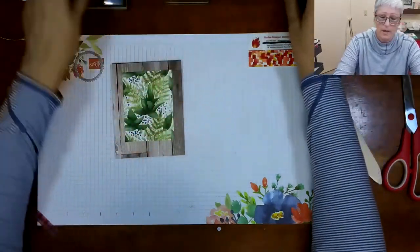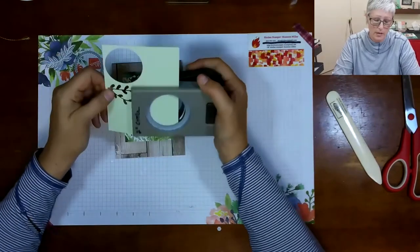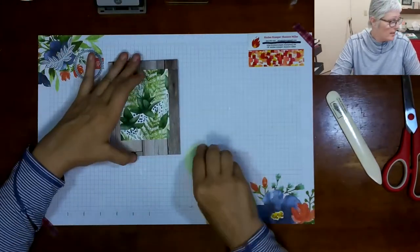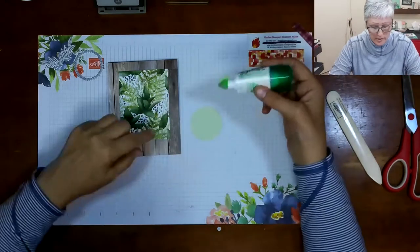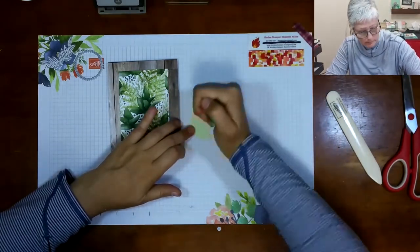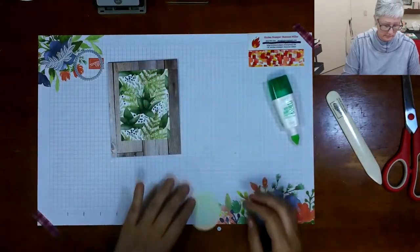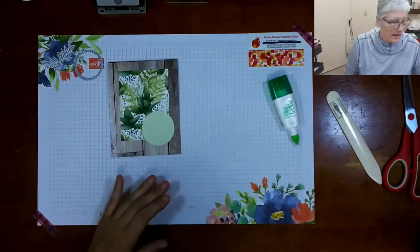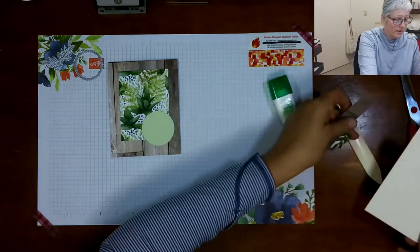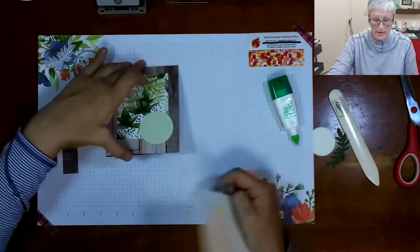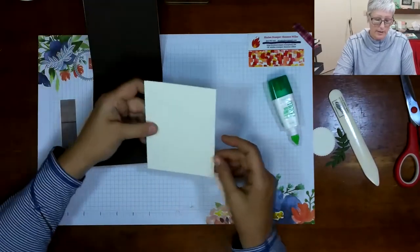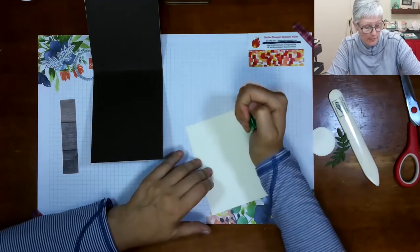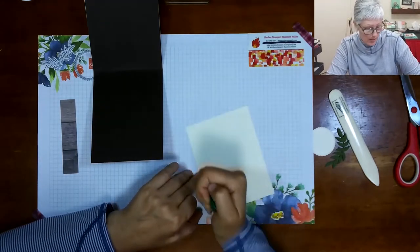Now I am going to quickly punch a two inch circle out of the Soft Seafoam cardstock and that is going to get glued to this lower corner. I have cut a Very Vanilla scalloped piece. This is another thing I love about this Forever Greenery paper pack - it is based with vanilla and white.